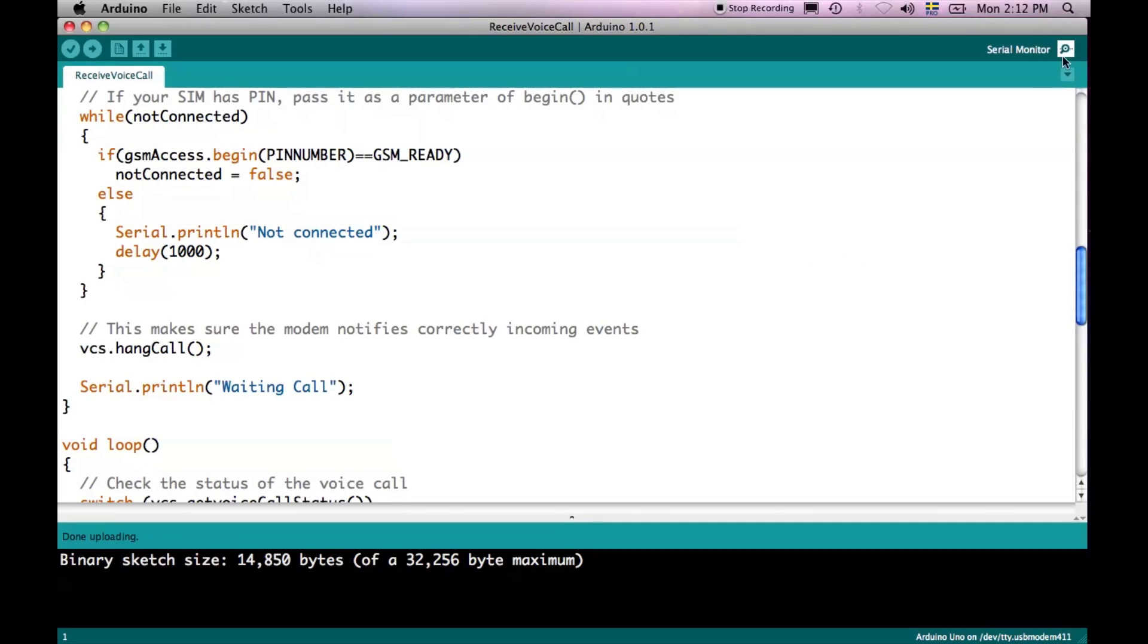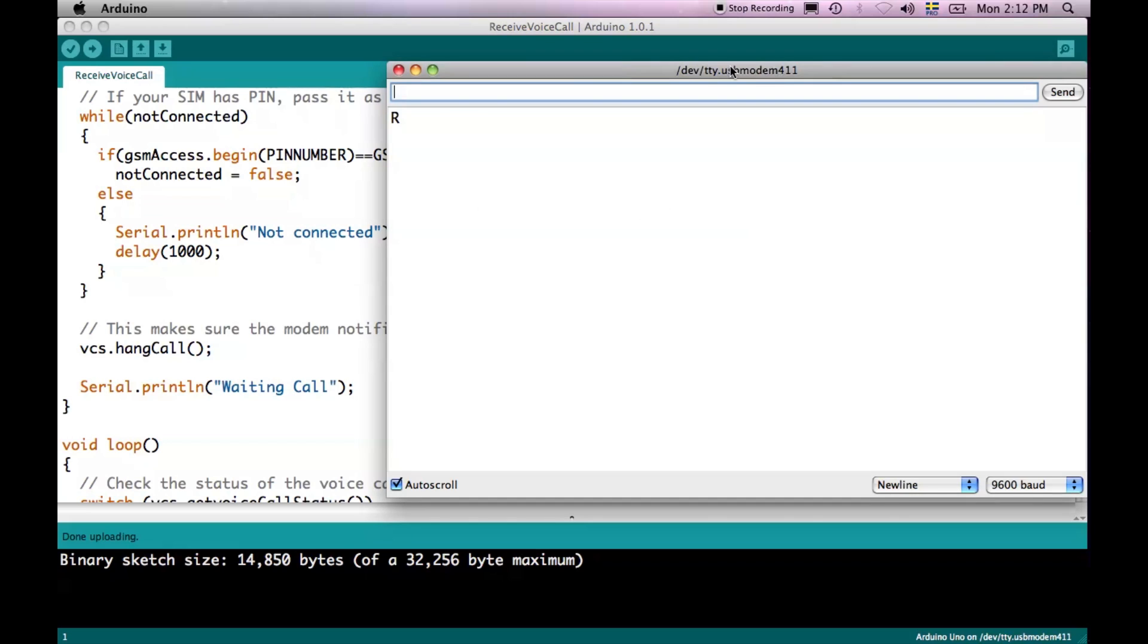Now the program has been uploaded. We just need to open the serial port monitor. The program will start and it will be taking some time to connect to the GSM network. And once it is connected to the GSM network, it will inform us. And from that moment on, we can start calling to the shield.